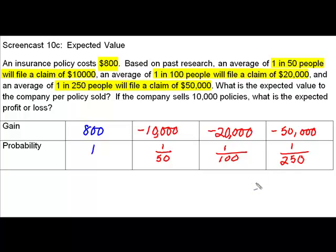The table helps us organize what we are dealing with. We are going to read the table top down when we set this scenario up. Remember that to find expected value, we are going to be multiplying the gain times the probability. In the first case, the gain is $800 times a probability of 1. In the second scenario, there is actually a loss of $10,000 and the probability for that happening is 1 fiftieth.